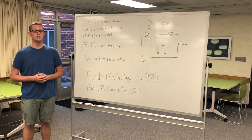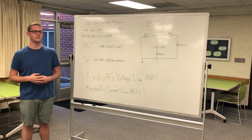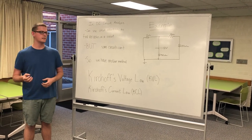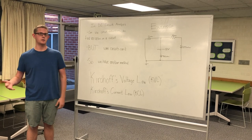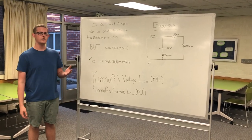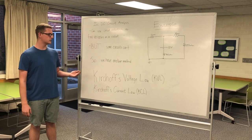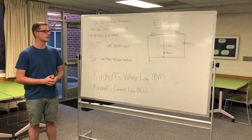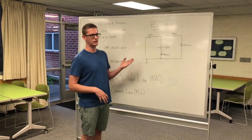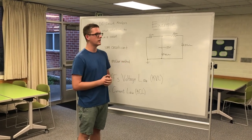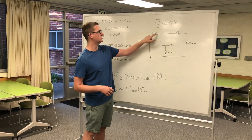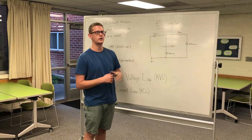Typically in DC circuit analysis, we can use circuit reduction to find different variables within a circuit. But sometimes there are certain circuits that we cannot use circuit reduction for. Therefore, we have another method: Kirchhoff's voltage law and Kirchhoff's current laws. Here's an example of a circuit which cannot be reduced using simple circuit reduction, because the voltage source is in the center and has two possible current directions where the current can flow.